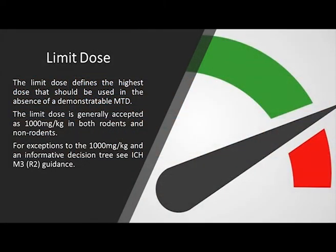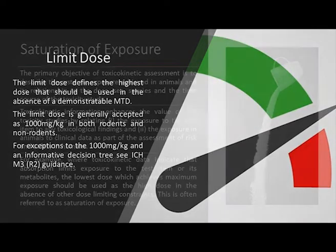The next criteria is limit dose. The limit dose defines the highest dose that should be used in the absence of a demonstratable MTD. The limit dose is generally accepted as 1000 mg/kg in both rodents and non-rodents. For exceptions to the 1000 mg/kg and an informative decision tree, please refer to ICH M3 R2 guidance.